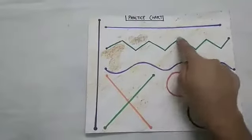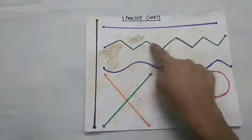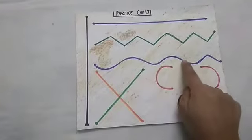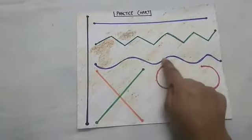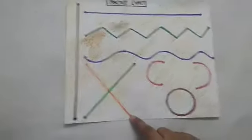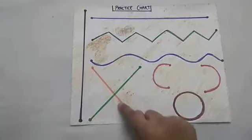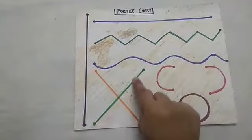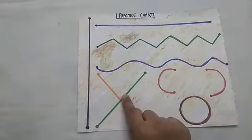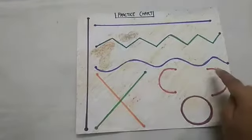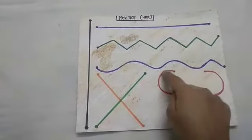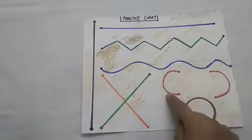This is zigzag line. This is wave. And this is slanting line — this is left slanting line, and this is right slanting line. Curve — right curve and left curve.